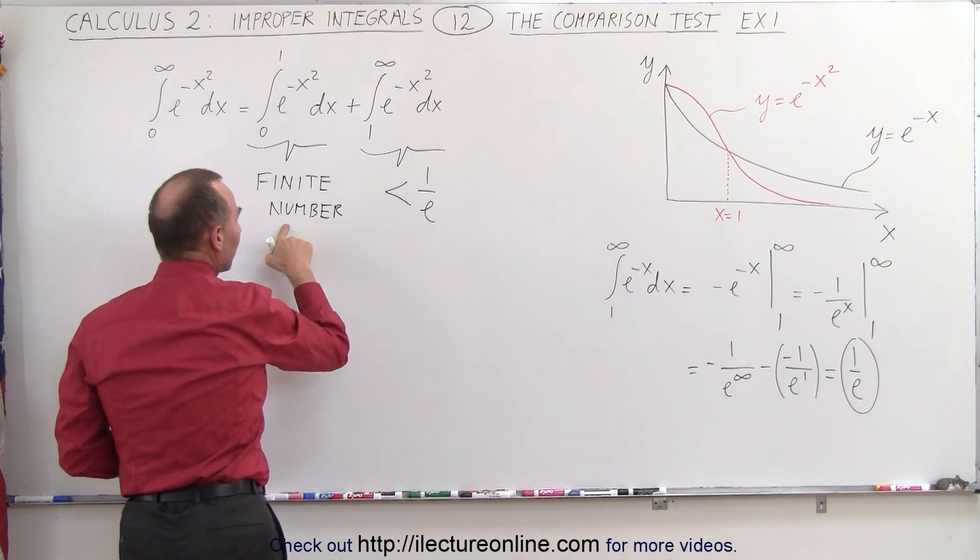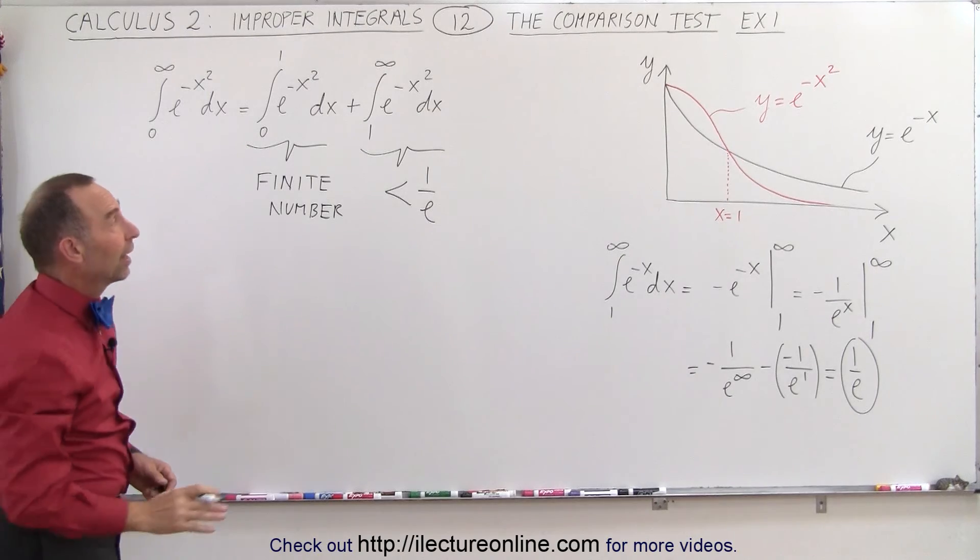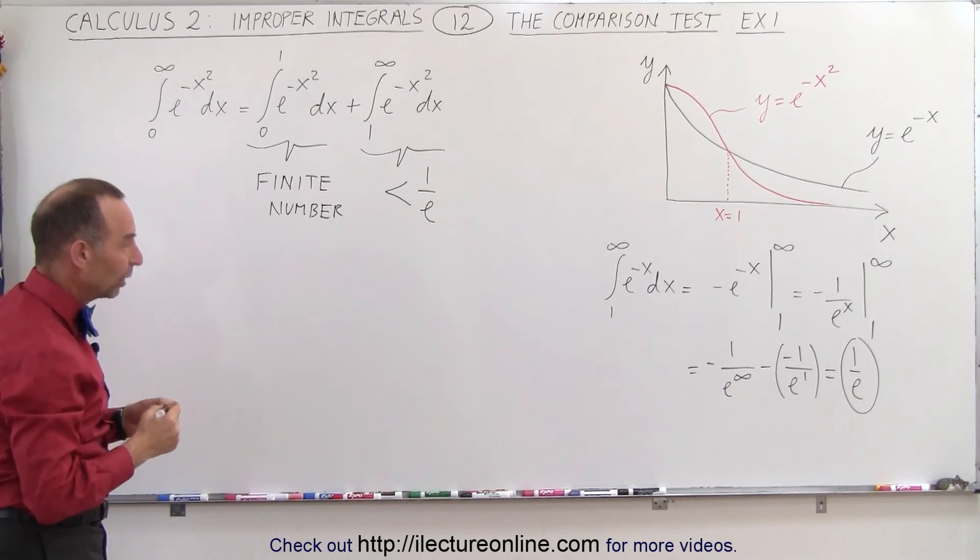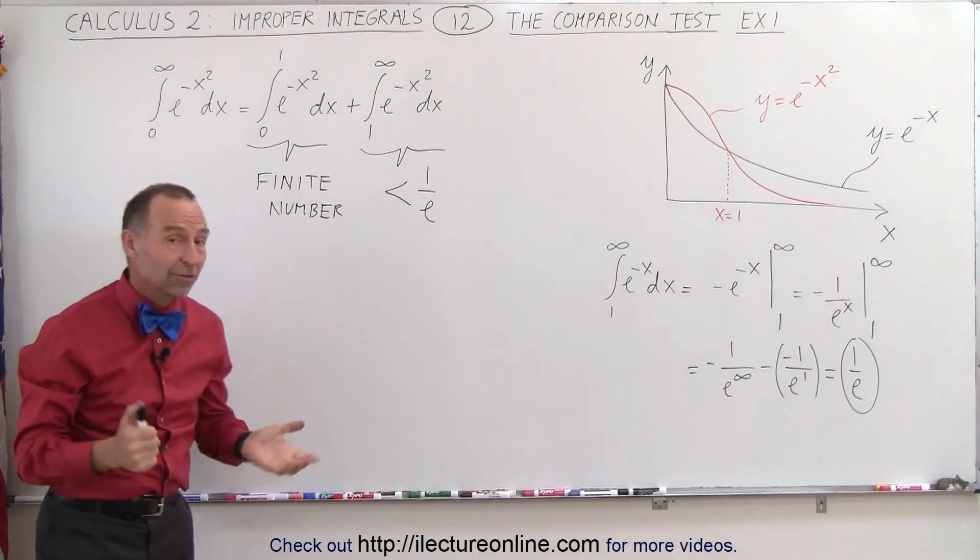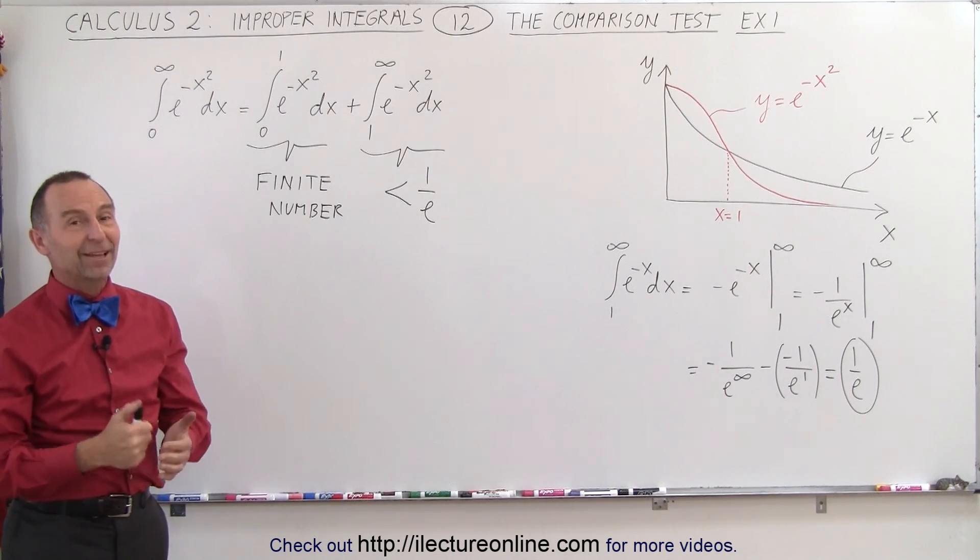And so the sum of a finite number and a number less than 1 over e together will be a finite number, and therefore that integral will indeed converge. So you can see the comparison test is actually quite handy, and that's how it's done.